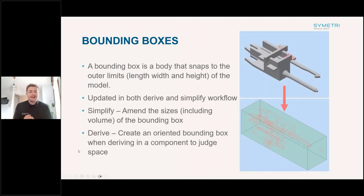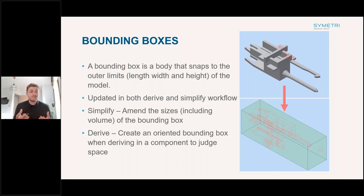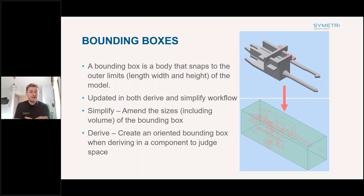The next new function is bounding boxes. A bounding box creates a box to the outer limits of the model so you can judge for space. For example, if this is a machine going into a factory, you might want to send the machine to the customer who's designed the factory layout without giving away the IP of the model. So you'd send out the box, they put it into their model, check that it fits for space, and you haven't given away the full details of the model.